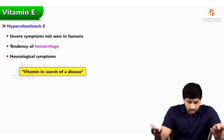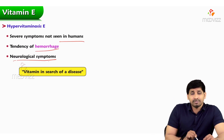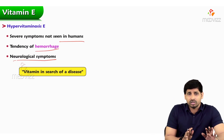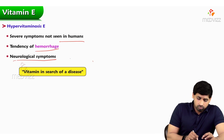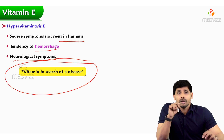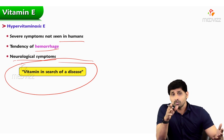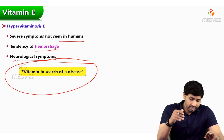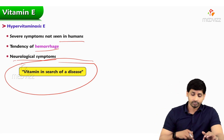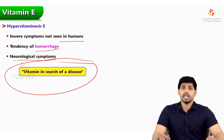As for hypervitaminosis, severe symptoms are not commonly seen in humans. Tendency of hemorrhage and neurological symptoms are characteristics of hypervitaminosis E. The ultimate quote for this vitamin is: 'Vitamin E — in search of a disease,' because it can cure almost all diseases. That's all about vitamin E. Thank you for listening.